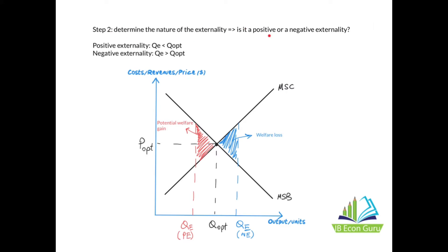Step two: determine the nature of the externality — is it positive or negative? If it's a positive externality, the equilibrium quantity will be less than the optimal quantity, meaning there is an under-allocation of resources. If it's a negative externality, the equilibrium quantity will be greater than Q opt. In the case of positive externalities, the market produces Q e, and there will be a potential welfare gain. With negative externalities, the equilibrium quantity exceeds Q opt and the blue triangle represents the welfare loss due to over-allocation.